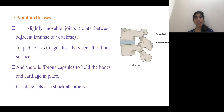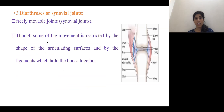Amphiarthrosis is a slightly movable type of joint. A cartilaginous pad is present between the articulating surfaces, and this cartilage acts as a shock absorber. The joints between the adjacent laminae of the vertebrae are this type of joint.